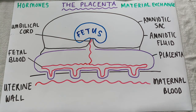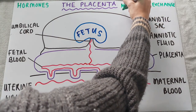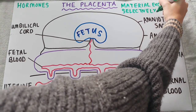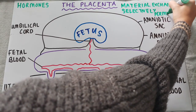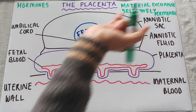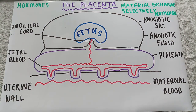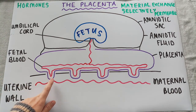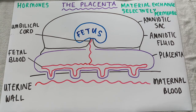In terms of the exchange of materials between the fetal and maternal blood, they need to go through the placental barrier, which is selectively permeable. At no point does the maternal blood and the fetal blood actually touch each other. There is a placental barrier ensuring that the maternal blood never directly contacts the fetal blood, though they are very close together so they can exchange nutrients across this selectively permeable membrane.